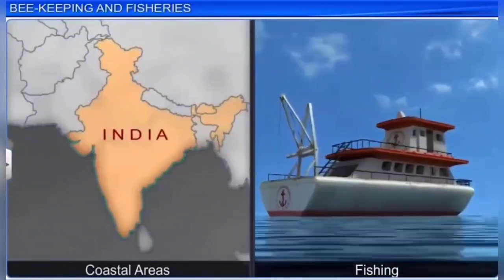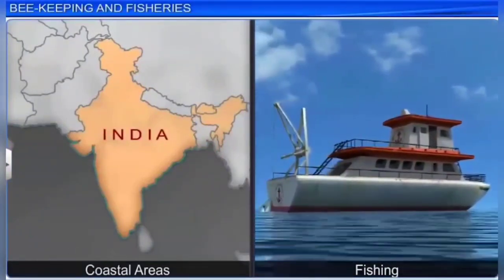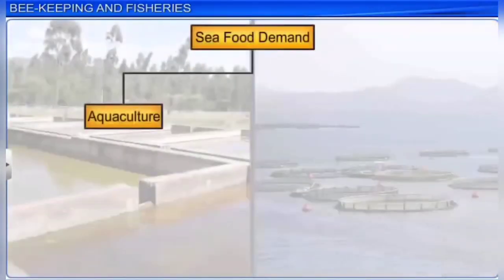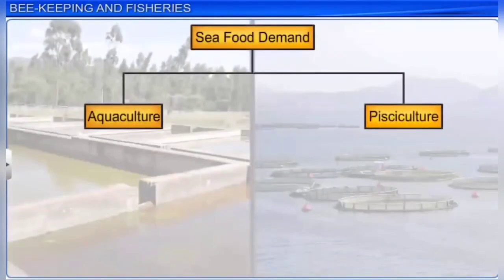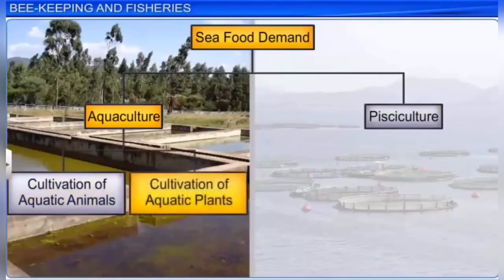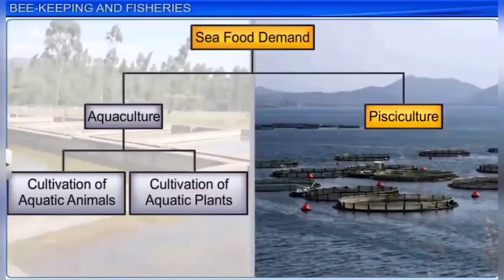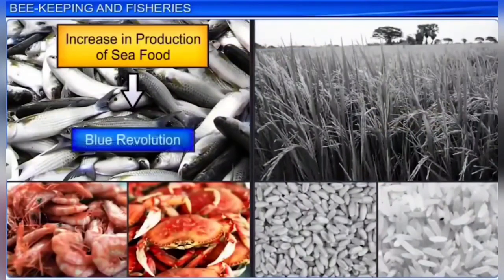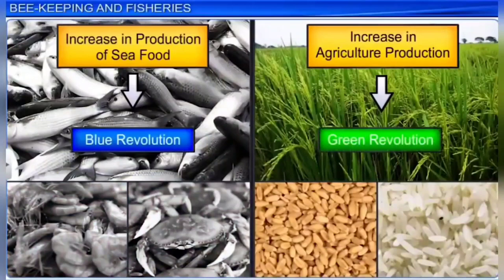Fisheries form the livelihood of many people in coastal areas of India, as seafood like fish, prawn, crab, and lobster are always in demand. Several techniques like aquaculture and pisiculture are employed to increase yield. Aquaculture is the cultivation of aquatic animals and plants for food, whereas pisiculture refers specifically to fish farming. This dramatic increase in seafood production was called the blue revolution, compared to the green revolution that brought an increase in agricultural production.